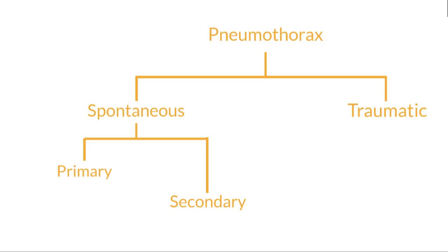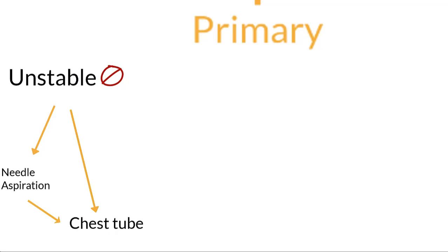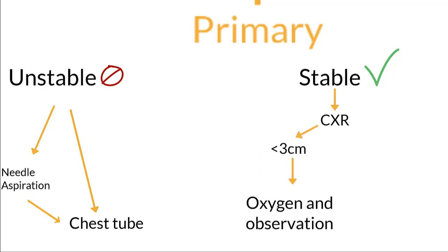Let's begin our discussion with primary spontaneous pneumothorax. If the patient is unstable, we move to immediate decompression using needle aspiration or chest tube thoracostomy. If the patient is stable, a chest x-ray should be ordered to assess the size of the pneumothorax. A pneumothorax smaller than 3 cm can be treated with supplemental oxygen and observation. A pneumothorax larger than 3 cm should be treated with chest tube thoracostomy.